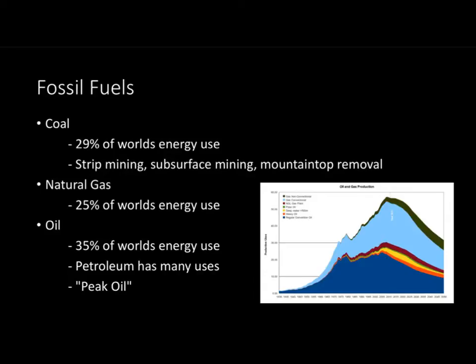The most popular fossil fuel is oil, which makes up about 35% of the world's total energy use. That's because petroleum is very versatile and has many uses. When looking at oil, there's something important to understand, which is peak oil, or Hubbert's peak. This theory states that when oil production comes to its peak, it then declines, but demand increases because of population size. Hubbert himself predicted that U.S. production of oil would peak in the 1970s, which is pretty much true. Peak oil is a scary topic because oil is a finite resource and we don't really know exactly when we're going to run out of it.